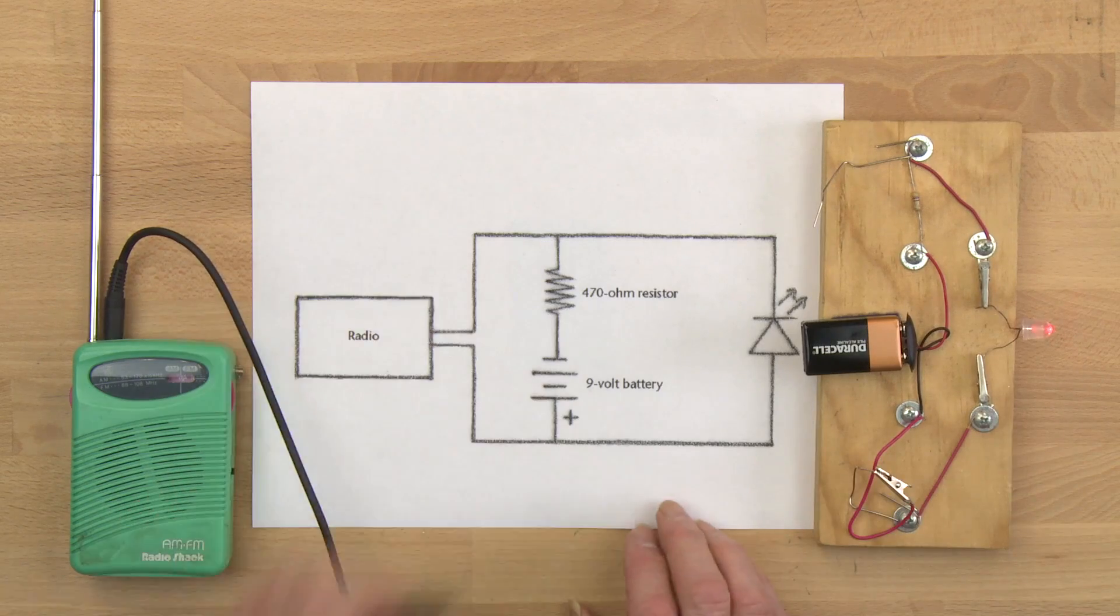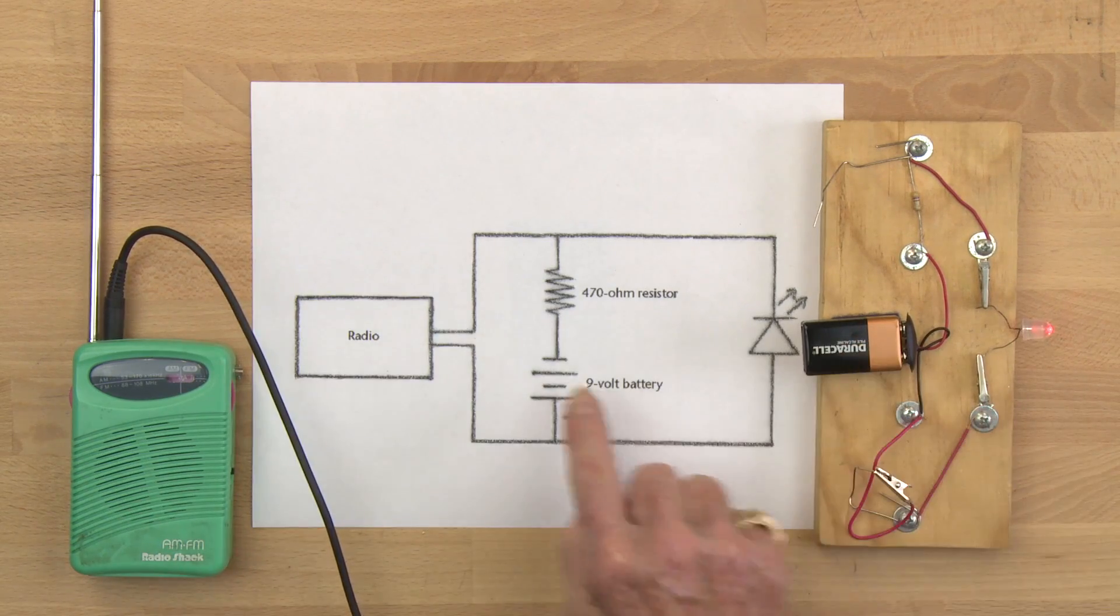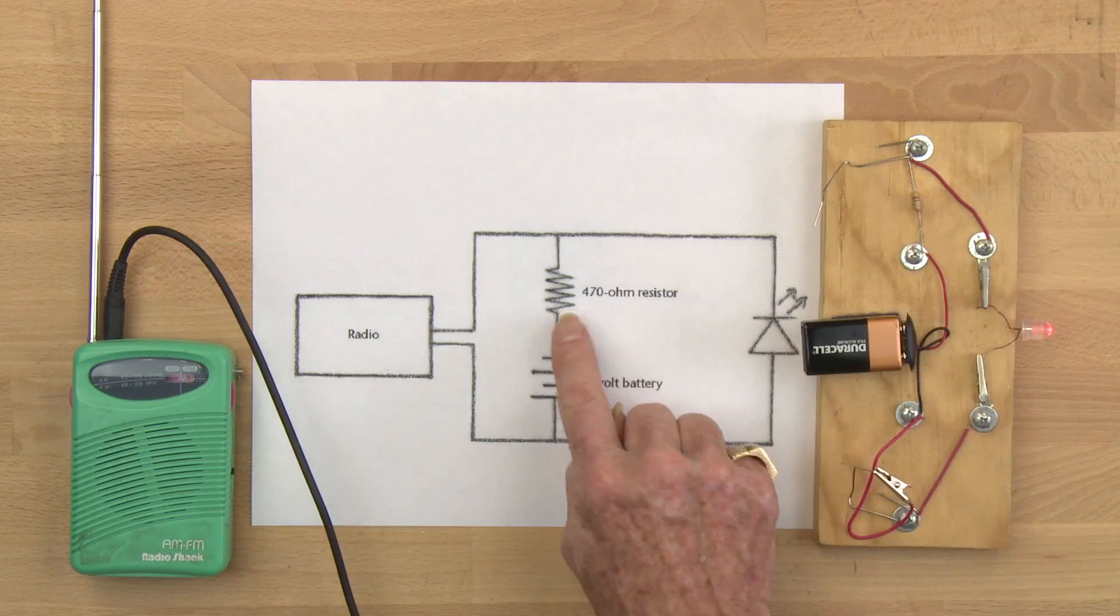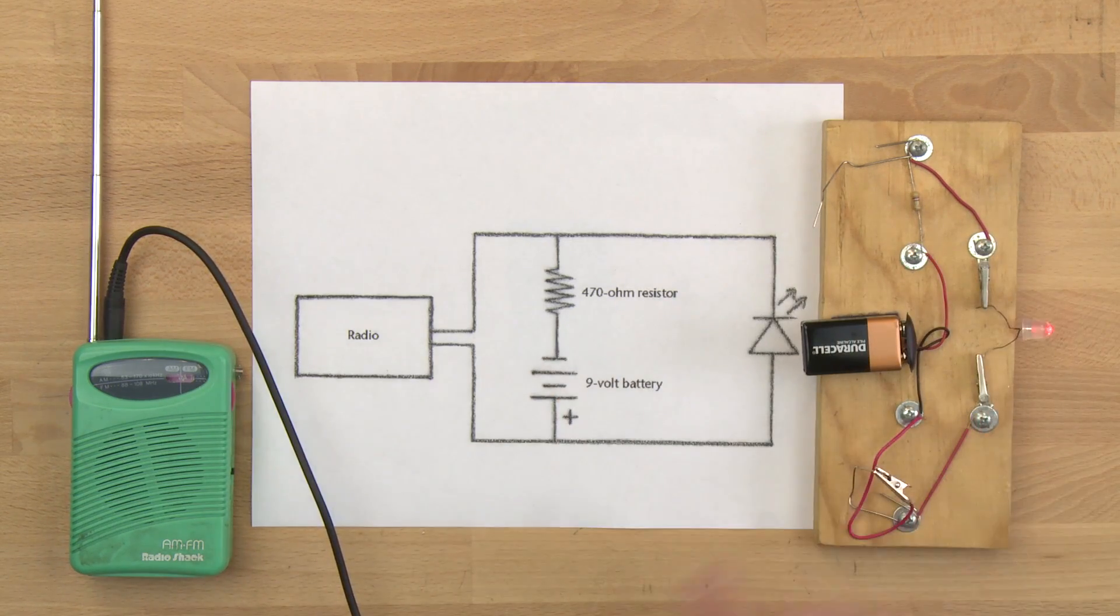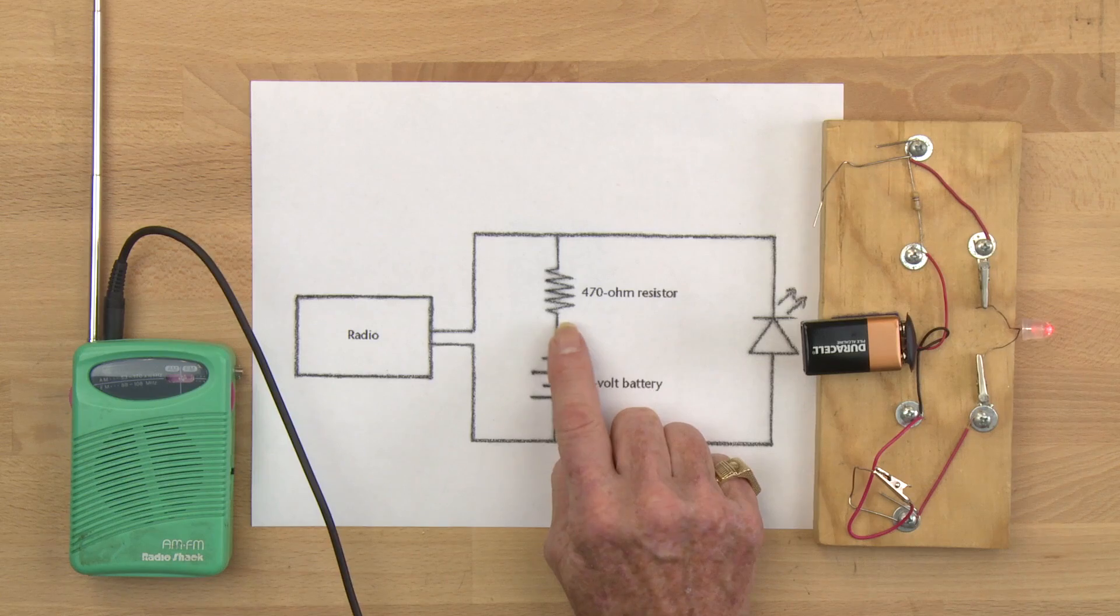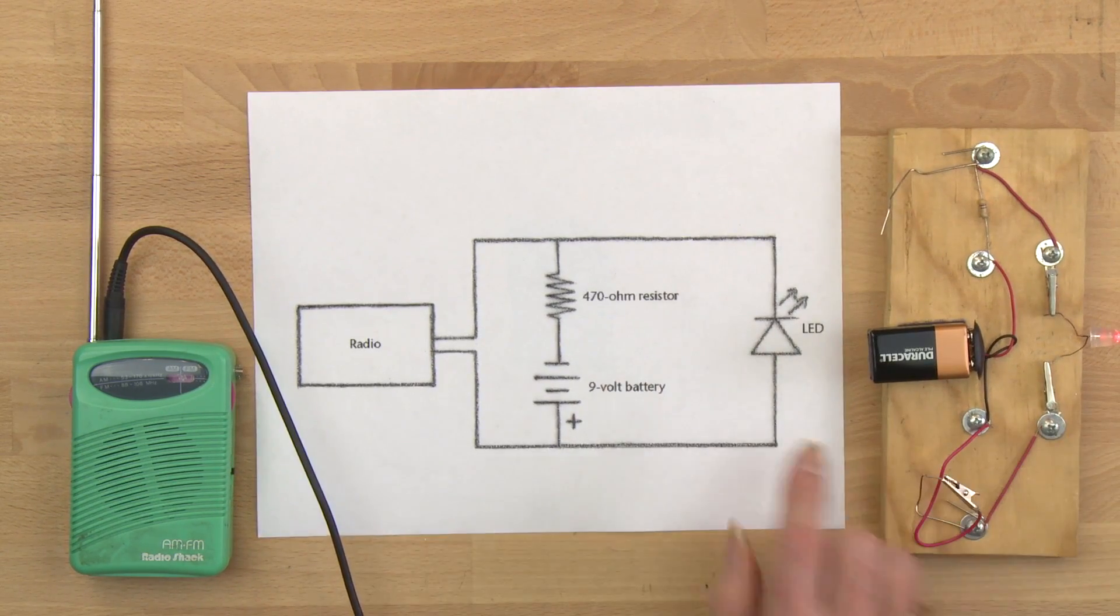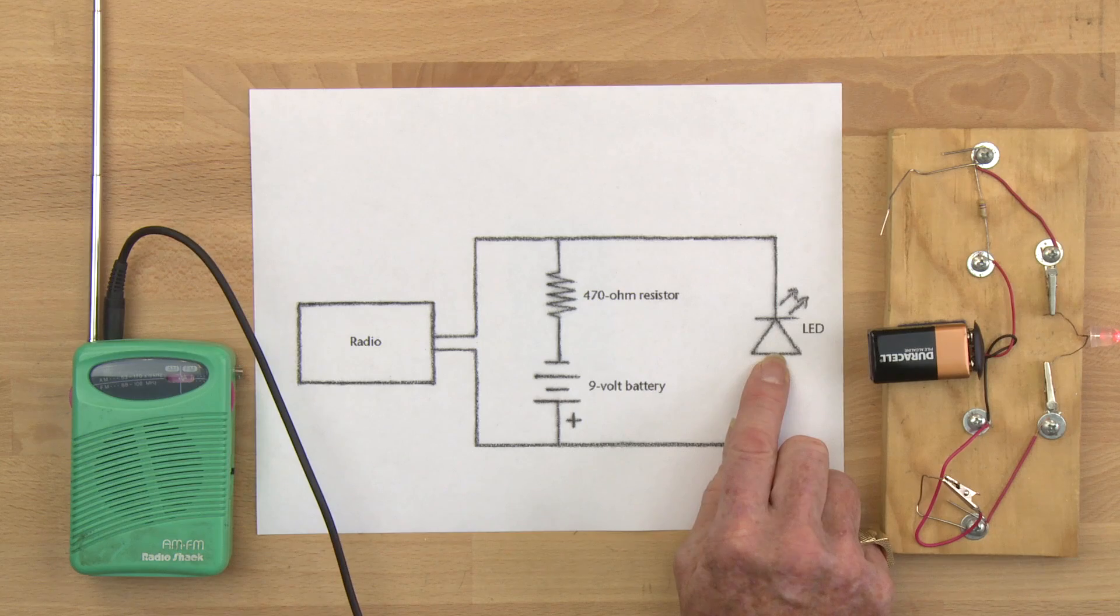Now in that circuit there's going to be a 9 volt battery which has a positive and a negative side and a 470 ohm resistor. If I don't have that 470 ohm resistor when I connect the 9 volt battery to my light emitting diode, the light emitting diode will burn out instantly.